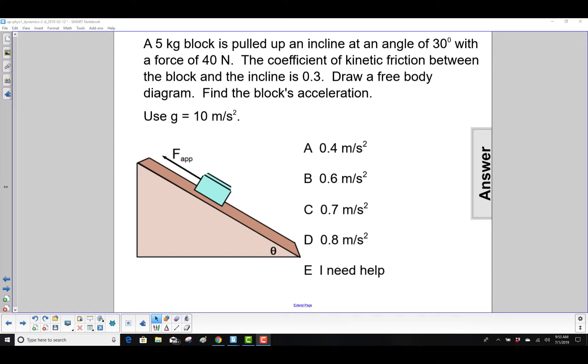A 5 kg block is pulled up an incline at an angle of 30 degrees with a force of 40N. The coefficient of kinetic friction between the block and the incline is 0.3. Draw a free body diagram and find the block's acceleration.